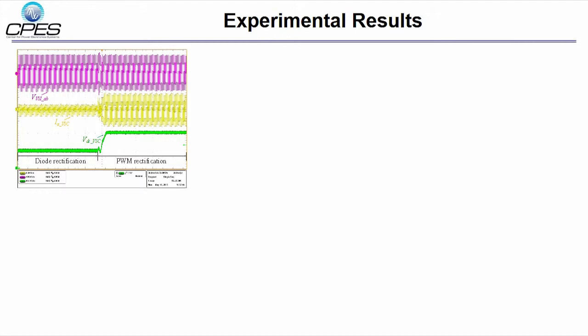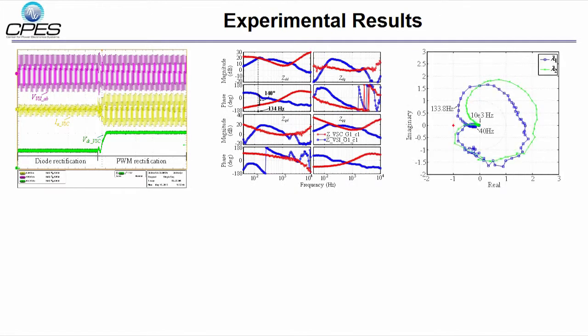After measuring the load and source impedance, the generalized Nyquist plot shows that the system is stable. The Nyquist plot also shows that the system is close to unstable condition.